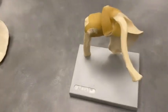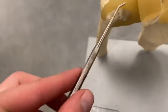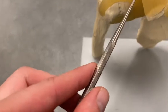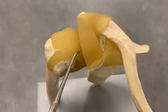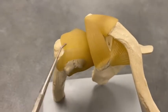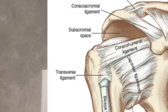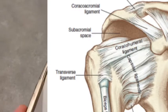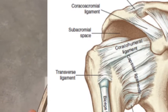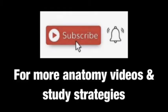The last one to mention is the coracohumeral ligament — here it is, coming across the top from the coracoid over to the humerus. And that has been your video on the shoulder ligaments. Thanks for watching.